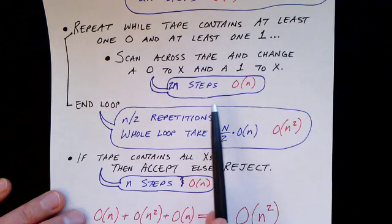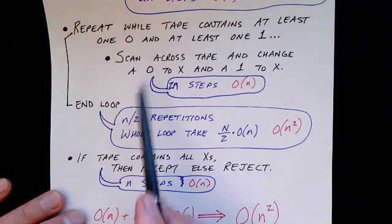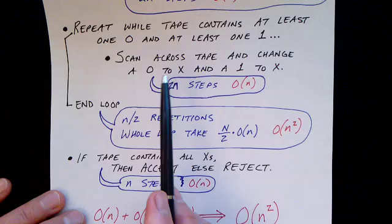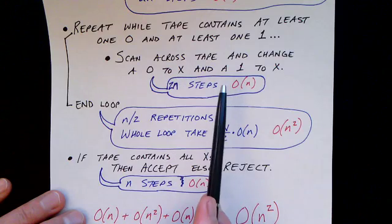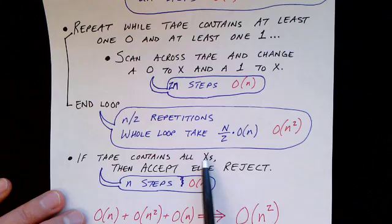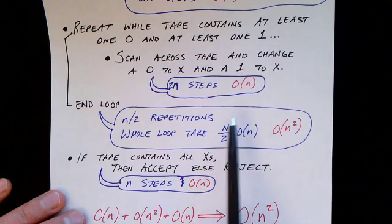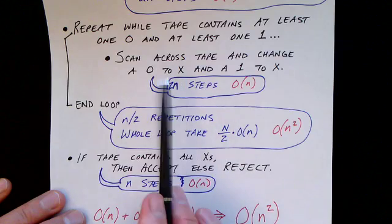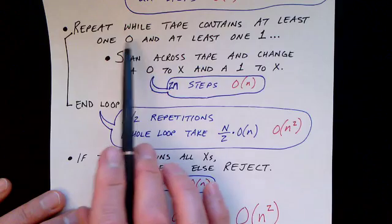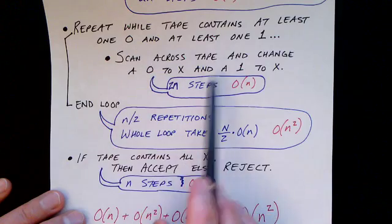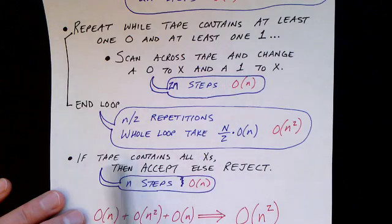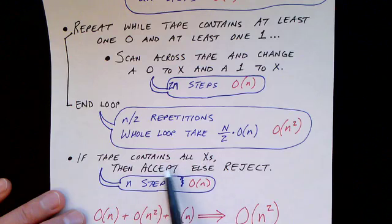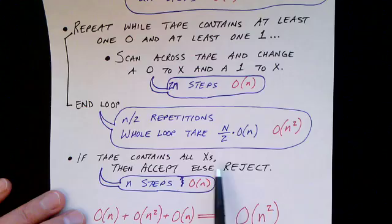If there is an equal number of zeros and ones, then at the time this loop terminates, we should have crossed off the last zero and the last one at the same time, and the tape should contain all X's. If the numbers were not equal, the loop will terminate after we've crossed off all the zeros, but there are still some ones left. So the last step is to scan the tape and make sure it contains all X's — if so, we accept; otherwise we reject.